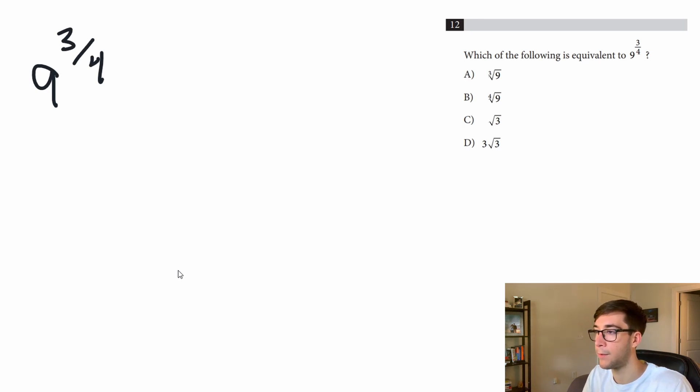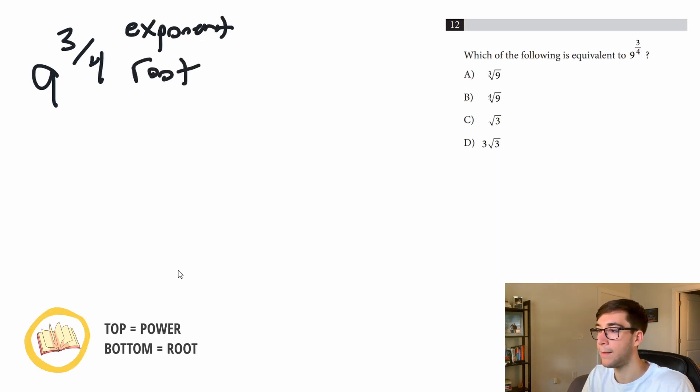So the rule with the exponents that are fractions: the top is the exponent and the bottom is the root. So if we were to rewrite this, it would be 9 cubed root 4.